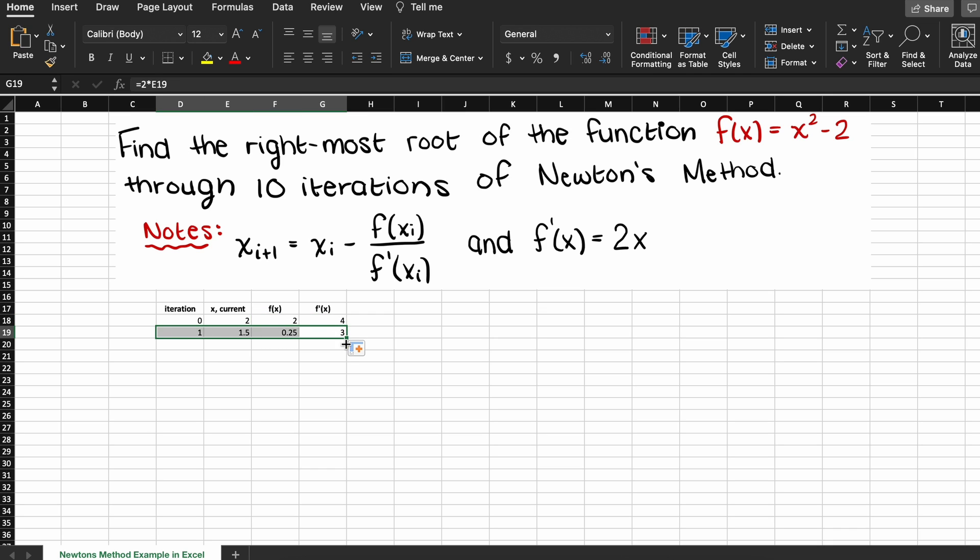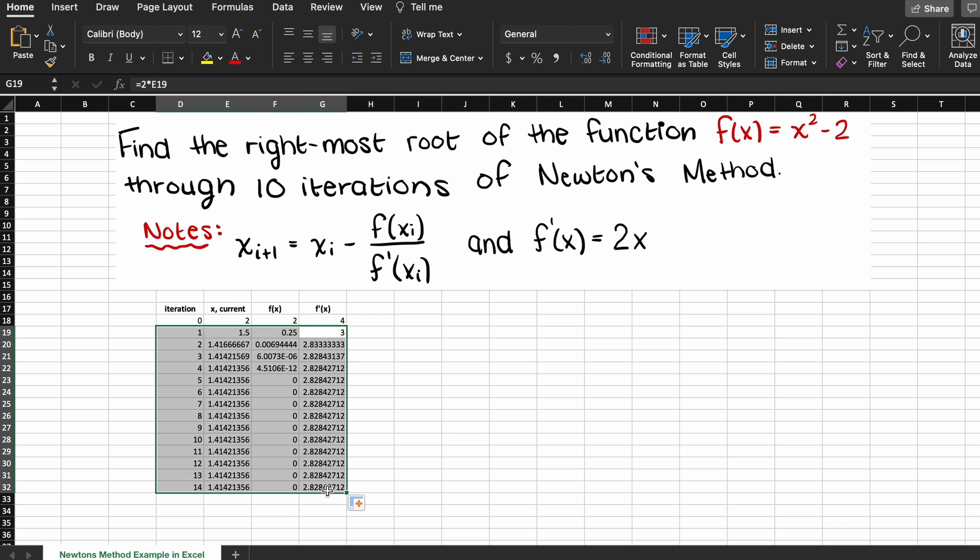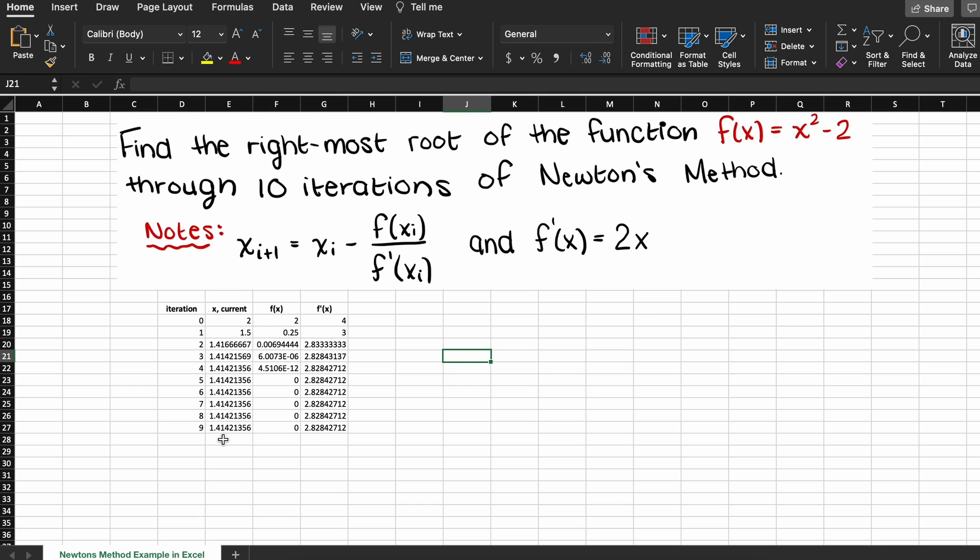Now what we need to do is drag down these few columns, and we can validate that our answer is not diverging, meaning that we can see that our current x value is trending towards very similar values, and it is not running away from itself.